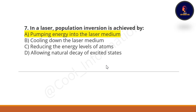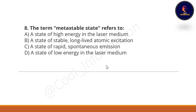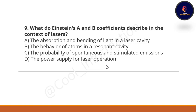Next question: The term 'metastable state' refers to what? Option A: a state of high energy in the laser medium. Option B: the state of stable, long-lived atomic excitation. Option C: a state of rapid spontaneous emission. Option D: a state of low energy in the laser medium. The correct option is B, which is the state of stable, long-lived atomic excitation.